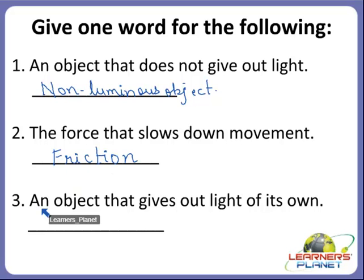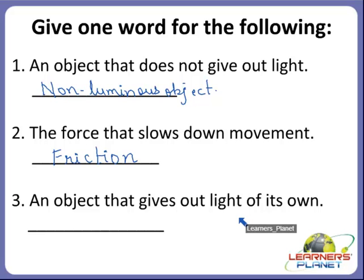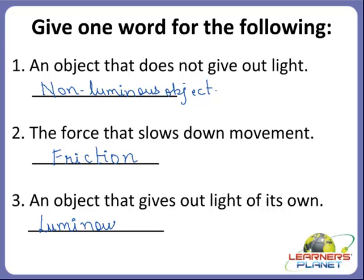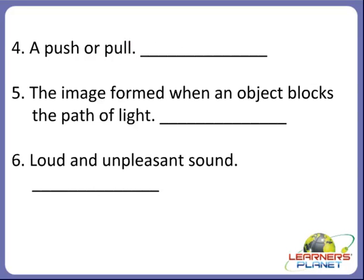An object that gives out light of its own — this is the inverse of the first one — it is called a luminous object. Luminous object gives out light of its own. A push or pull — what is it called? It is called force. A push or pull is called force.